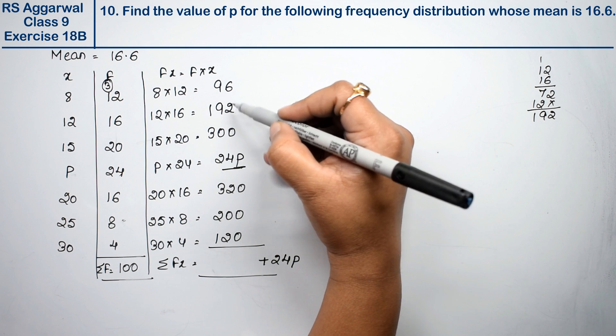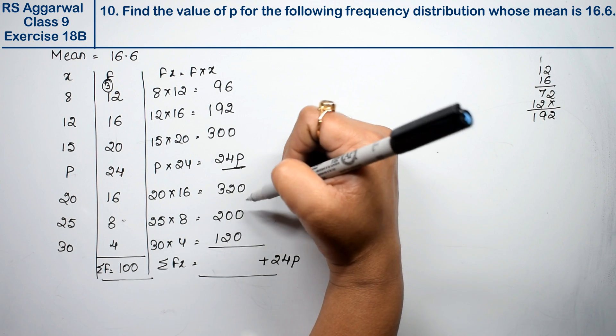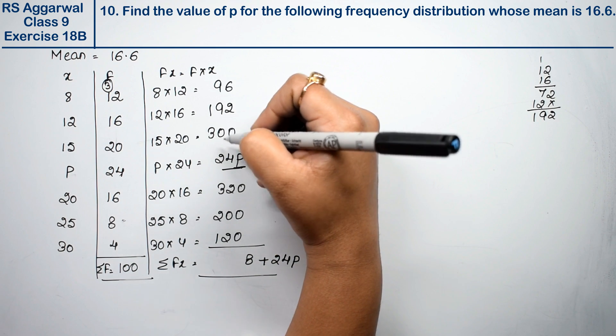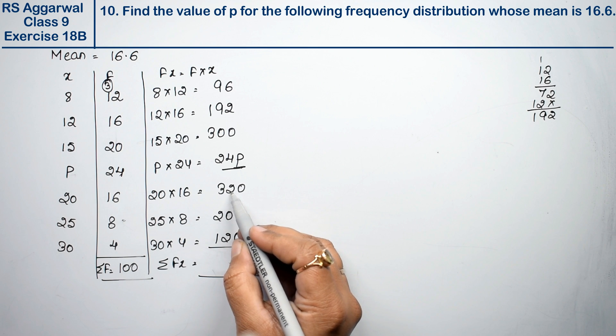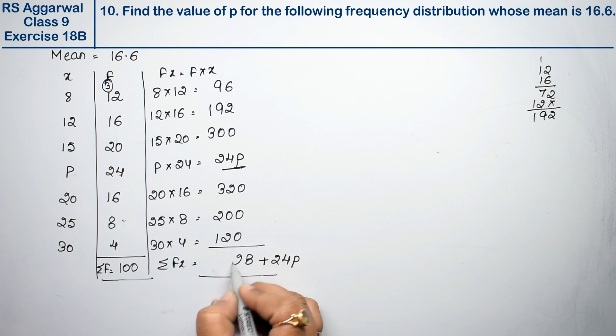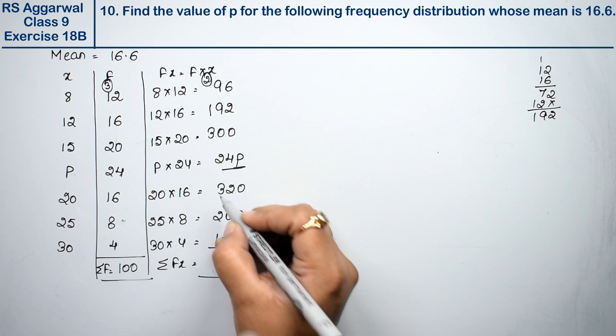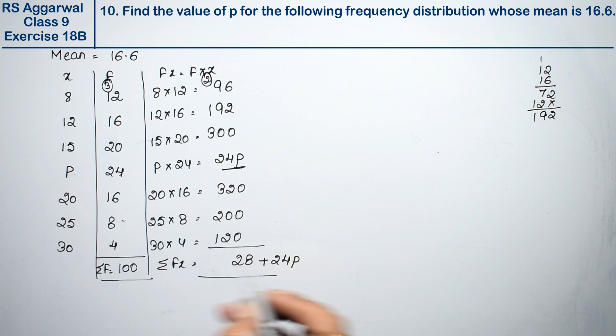Now adding the constant fx terms: 96 plus 192 plus 300 plus 320 plus 200 plus 120, working through the addition carefully, equals 1228.